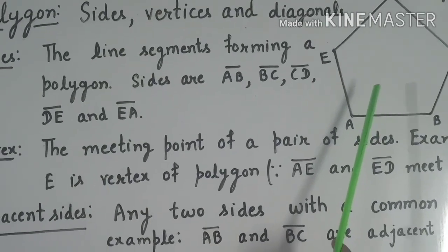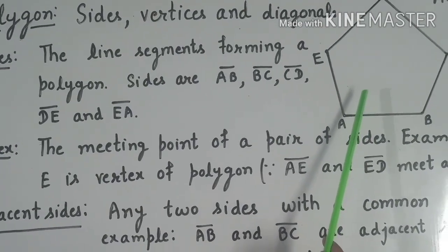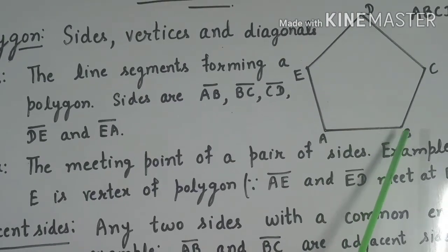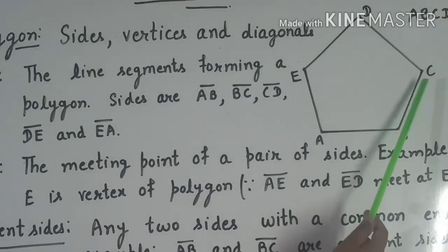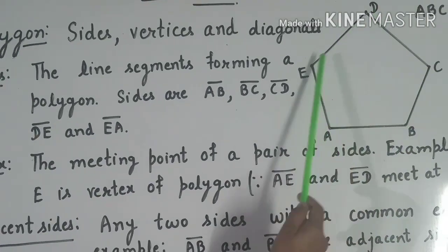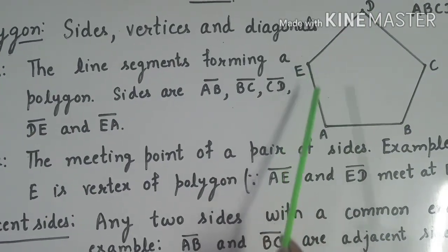As you can see, the sides of polygon ABCDE are: AB, BC, CD, DE, and EA.